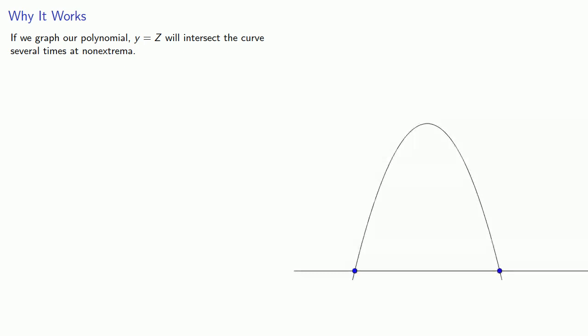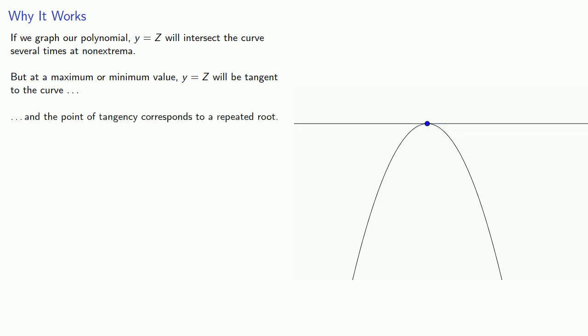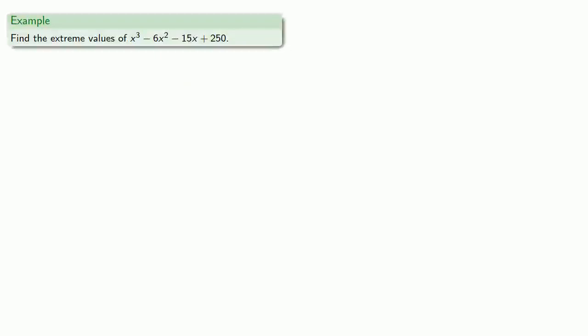Let's see why this works. If we imagine graphing our polynomial, y equals z will intersect the curve several times at non-extrema. But if I imagine changing the value of z, that moves this horizontal line vertically and at a maximum or minimum value, y equals z will be tangent to the curve. And the point of tangency corresponds to a repeated root.